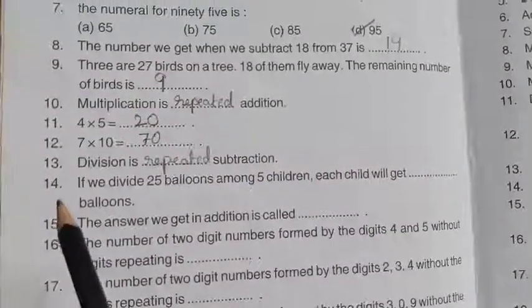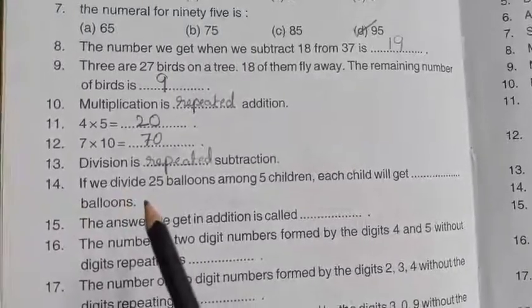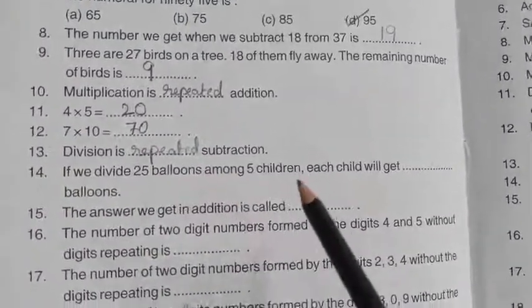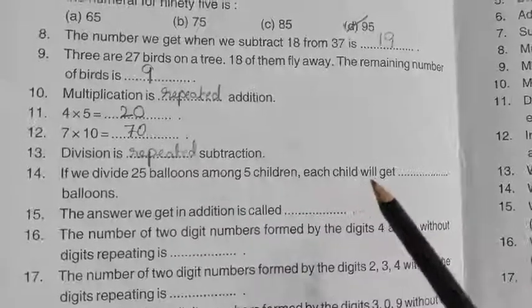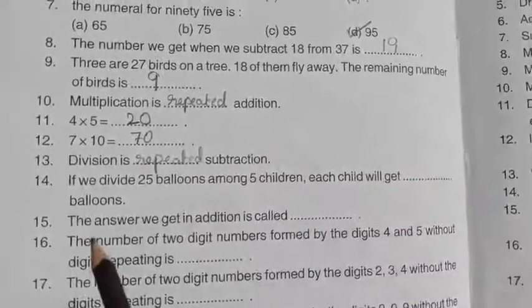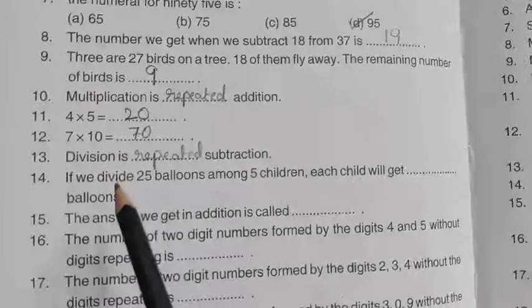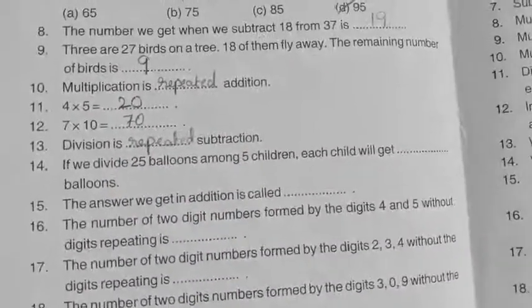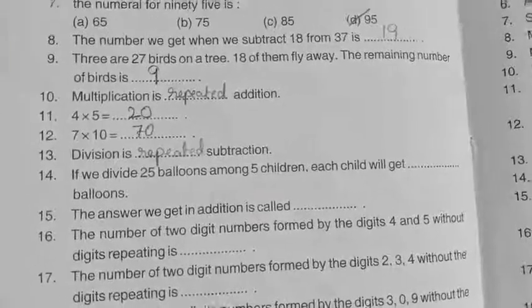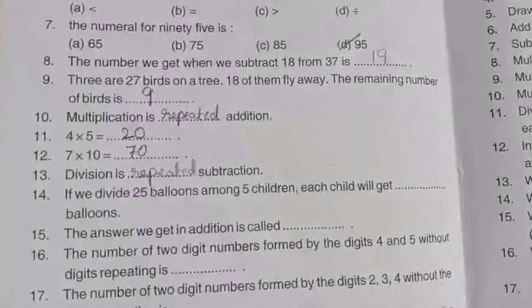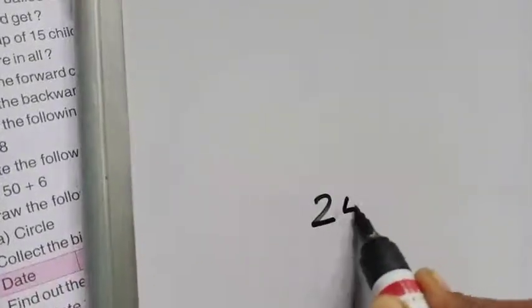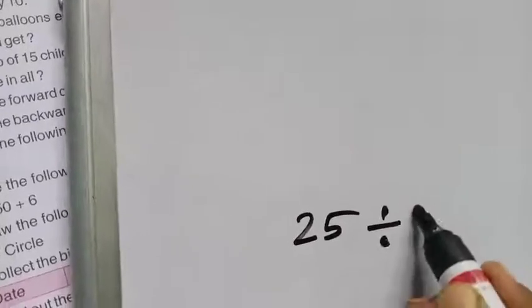Now 14th question. If we divide 25 balloons among 5 children, each child will get dash balloons. So divide means it is a division, isn't it? So now we have to do a rough work, so kindly don't get or don't write the direct answer. Okay. Now right here, 25 divided by 5.